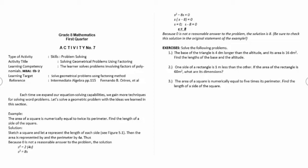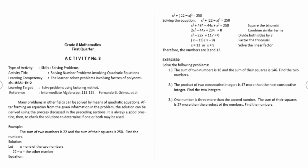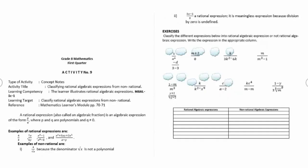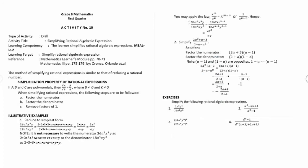Activity number seven is solving geometrical problems using factoring. Activity number eight is solving number problems involving quadratic equations. Activity number nine is classifying rational algebraic expressions from non-rational. Activity number ten is simplifying rational algebraic expressions.